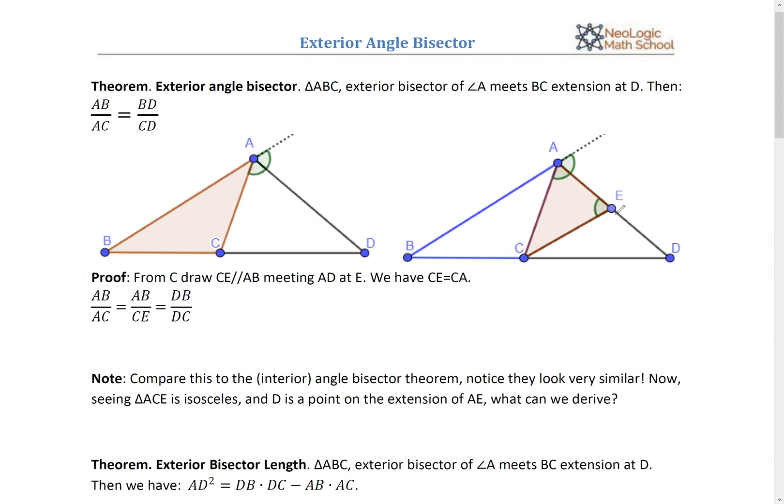And with bisectors and parallel lines, you should always be looking for an isosceles triangle. All right, so right now, which one is isosceles? Well, it's this one. Because this angle equals this, and then this one now equals this because AB is parallel to CE. So, triangle ACE is isosceles, so AB divides AC equals AB divides EC.